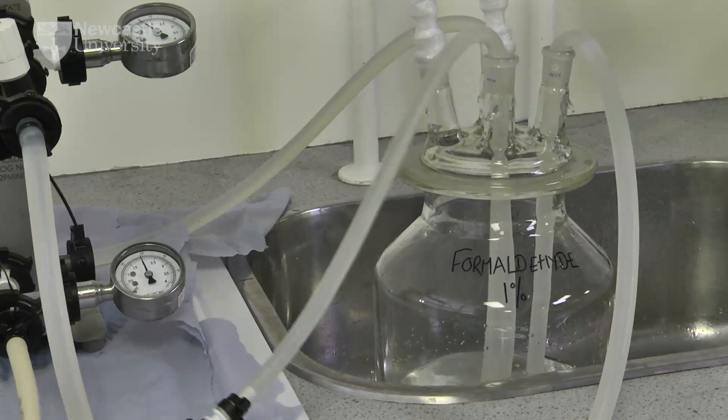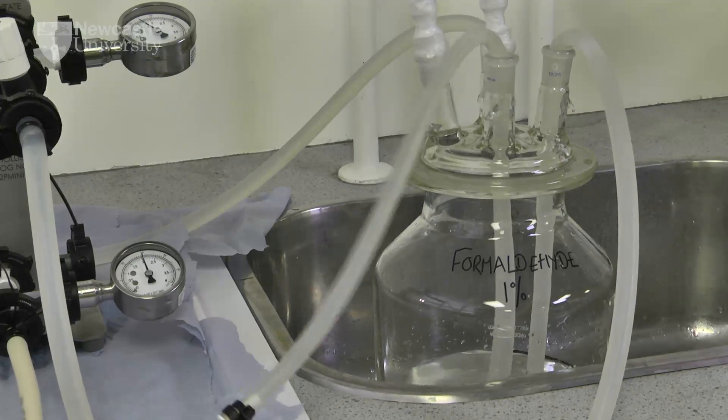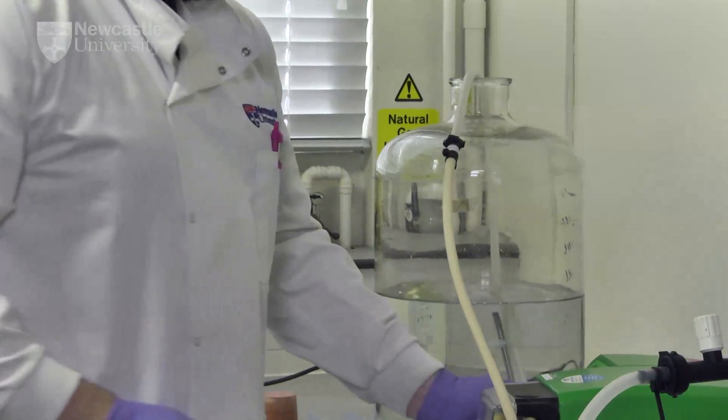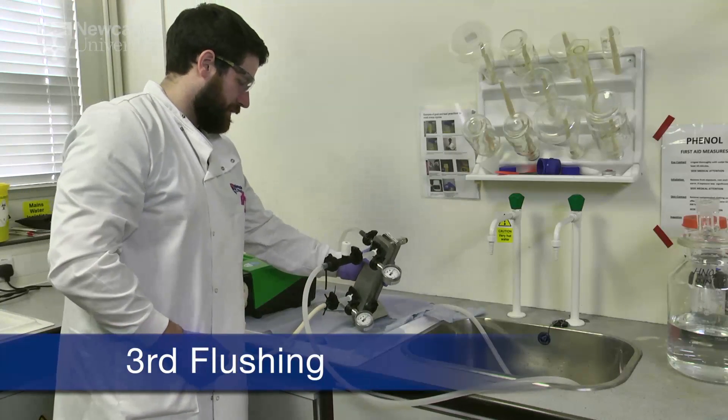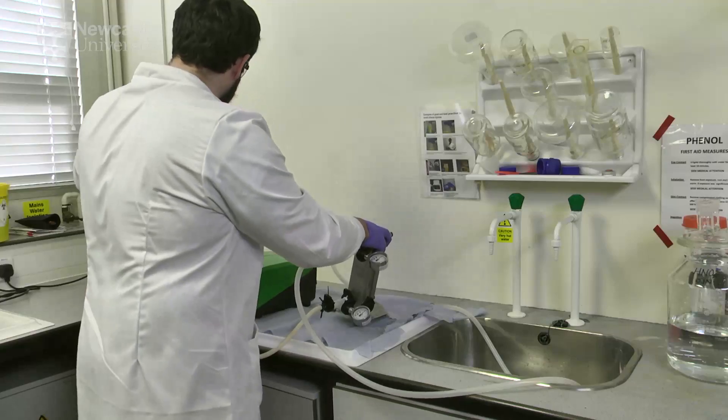The system is flushed once more as previously described. The normalised water permeability or the passage of clean water through the cassette under standard conditions can be used as a measure of cassette integrity.